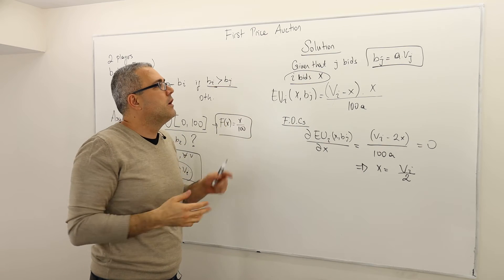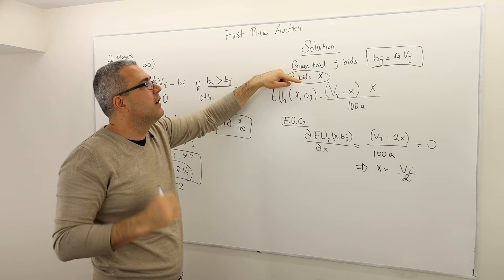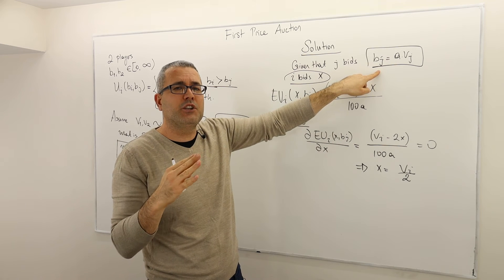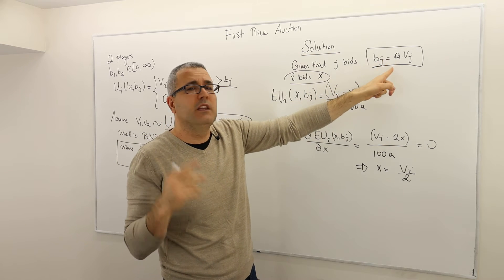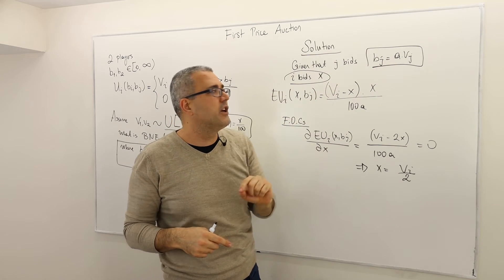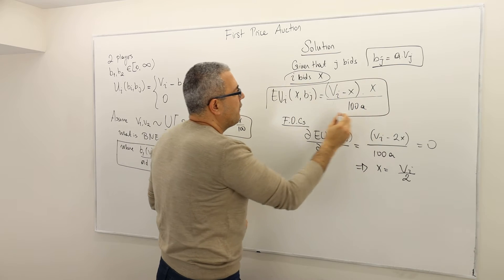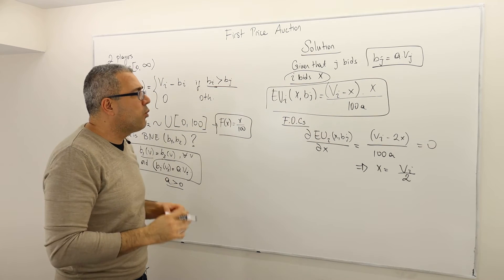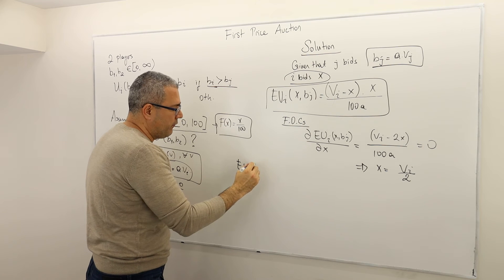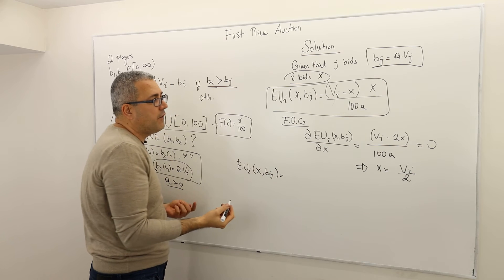So I calculate the expected payoff of player I. The expected payoff, given his bid X and his opponent's bid, is: probability of winning times his payoff if he wins — V_I minus his bid X — plus probability of losing times zero.